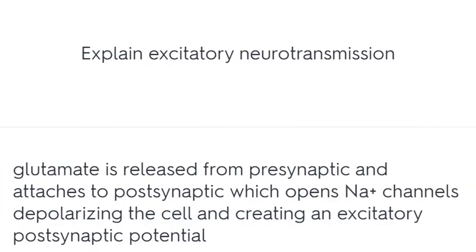Explain excitatory neurotransmission. Glutamate is released from the presynaptic neuron and attaches to the postsynaptic neuron, which opens Na+ channels, depolarizing the cell and creating an excitatory postsynaptic potential.